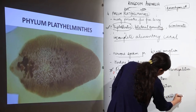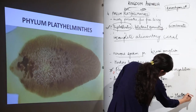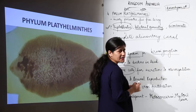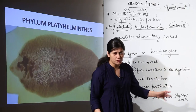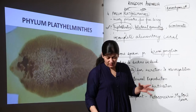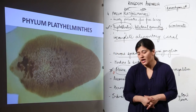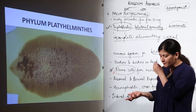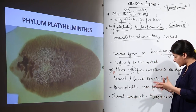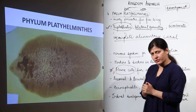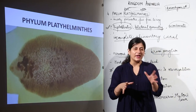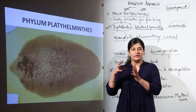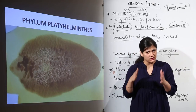In terms of larval stages, platyhelminths have several types of larvae — such as metacercaria, Müller's larva, and cercaria larva, among others. You need to remember any two names. Different classes of platyhelminths have different larvae. The key point is that they have many larval stages, and you are not required to memorize all the names.